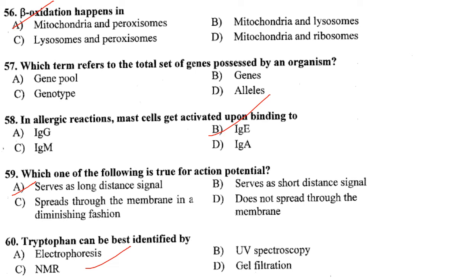Beta oxidation occurs in the mitochondria. Peroxisomes carry out both alpha and beta oxidation, and omega oxidation occurs in the endoplasmic reticulum. Beta oxidation takes place in mitochondria and peroxisomes. Which term refers to the total set of genes possessed by an organism? The answer is genome, but it is not given in the options — possibly a printing mistake. A gene pool is the total genetic diversity found within a population or species.